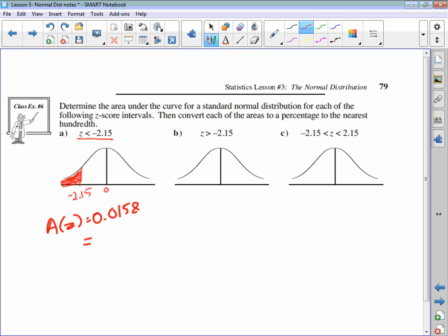The area to the left of the z-score was 0.0158. So area of z is 0.0158, or multiply that by 100, you get 1.58%. Either one.